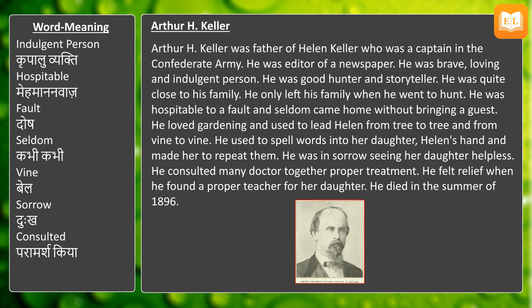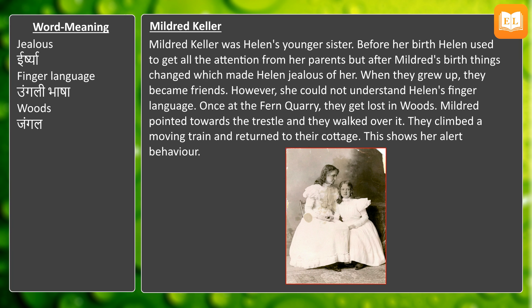Arthur H. Keller loved gardening and used to lead Helen from tree to tree and from vine to vine. He used to spell words into his daughter Helen's hand and made her repeat them. He was in sorrow seeing his daughter helpless, and consulted many doctors to get her proper treatment. He felt relief when he found a proper teacher for his daughter. He died in the summer of 1896.